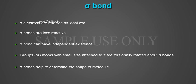Groups or atoms with small size attached to it are torsionally rotated about Sigma bonds. Sigma bonds help to determine the shape of the molecule.